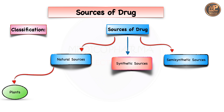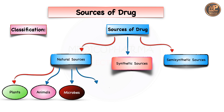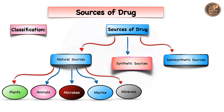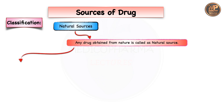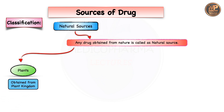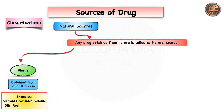Natural sources are further subdivided into plant source, animal source, microbes, marine, and mineral sources. Any drug obtained from nature is called a natural source. Plant source means any drug obtained from the plant kingdom — examples include alkaloids, glycosides, volatile oils, resins, tannins. Specific examples: morphine and codeine are alkaloids; digoxin and digitoxin are glycosides; eugenol is a volatile oil.